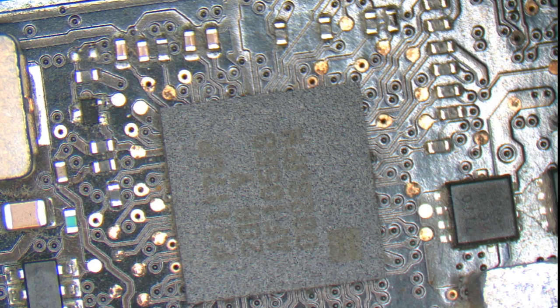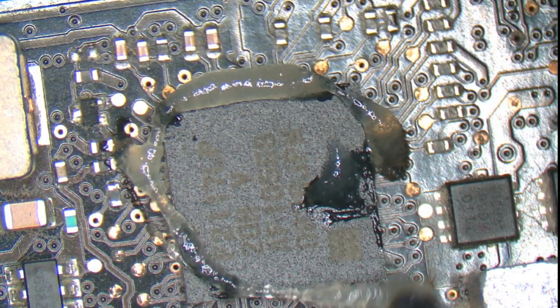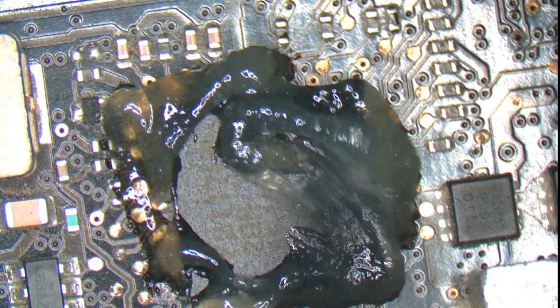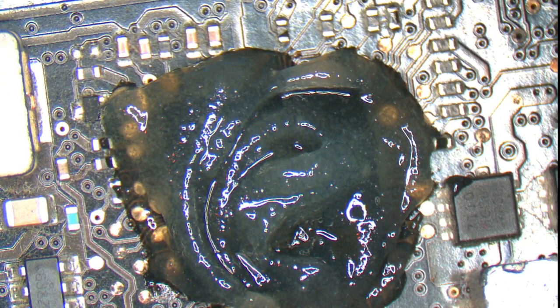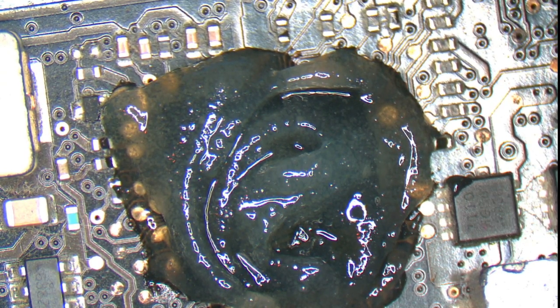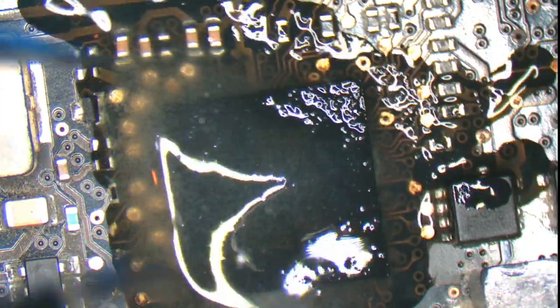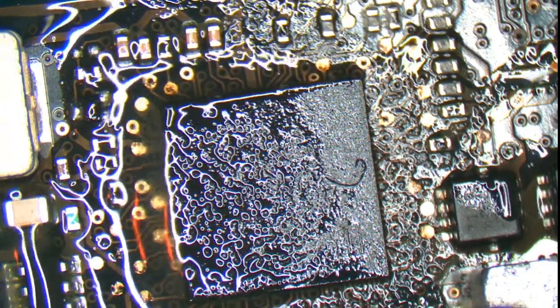To start with we're going to need some flux, so we need some flux all around the chip. What we're going to do is heat that chip. Everybody's got their own way of heating it, some people like to heat it really quickly, some people like to take their time. I like to heat it really quickly, get it off as quickly as possible, that way you don't damage any components around it.